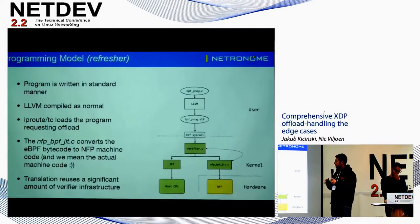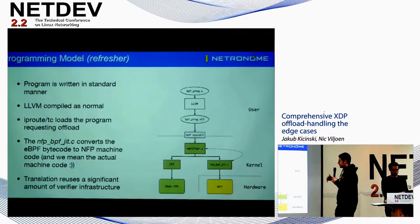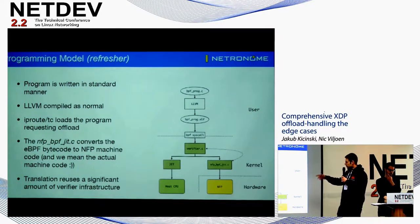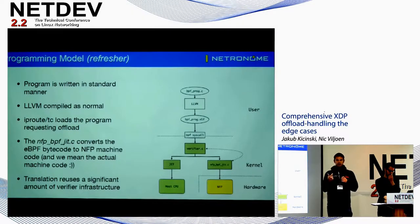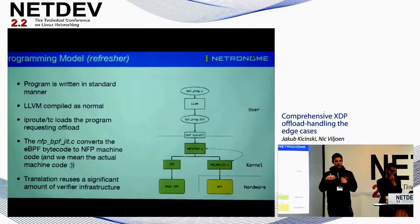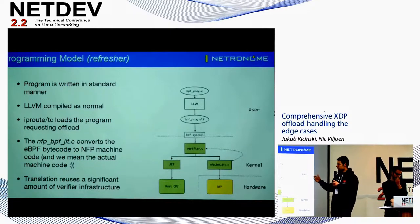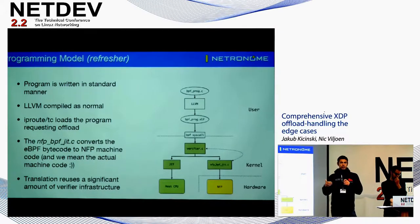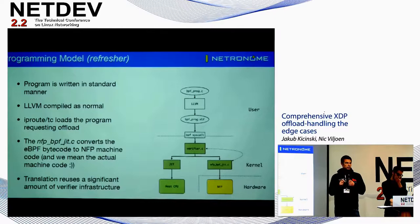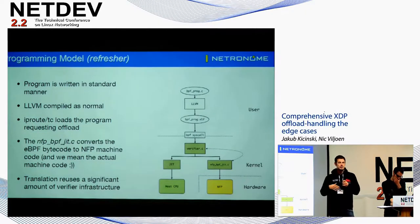The programming model has changed slightly recently, and Jakob will go through those changes. Essentially, you compile and run your programs as you would normally. Everything runs as per normal until you reach the verifier. From there, we go into the driver where we can detect if you want to offload the program via XDP root or, if using CLS BPF, via TC. At that point we rerun the verifier with extra checks for the JIT and the actual offload. If there's an unsupported map type, we won't offload and it runs in the driver as normal. The idea is to give you the offload if you want it and not if you don't.